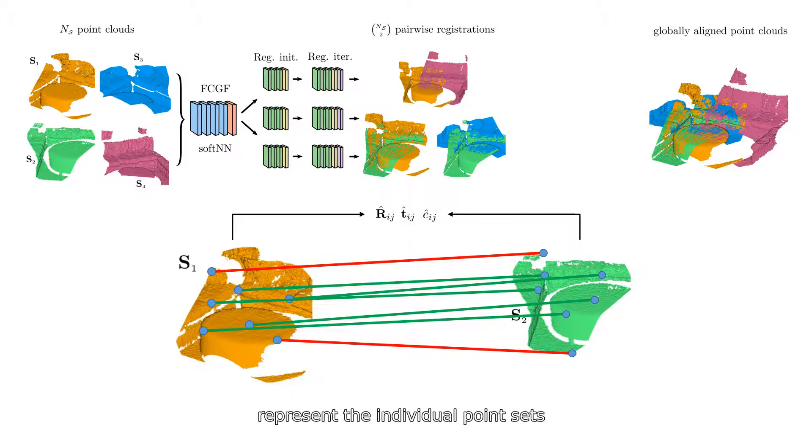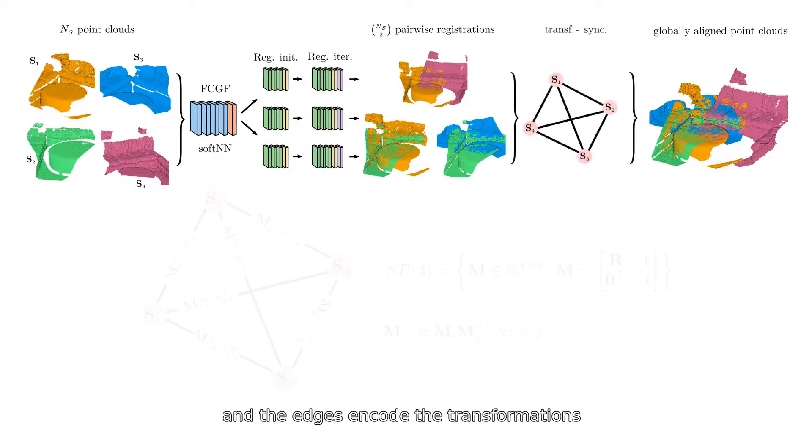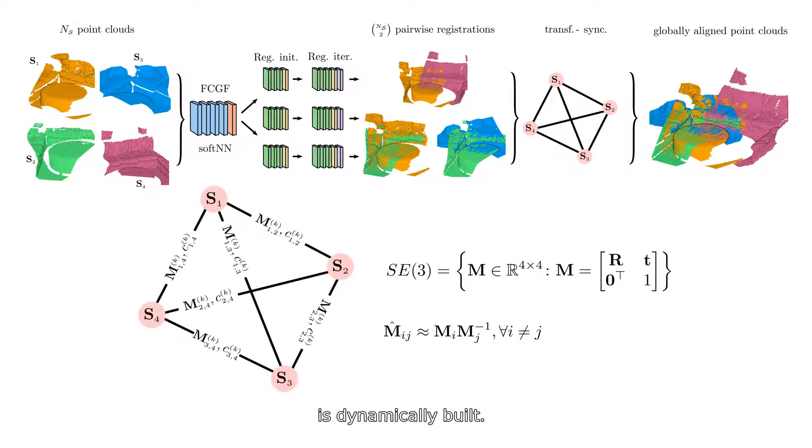a graph in which the vertices represent the individual point sets and the edges encode the transformations and their confidence is dynamically built.